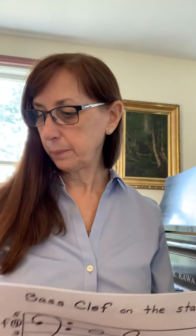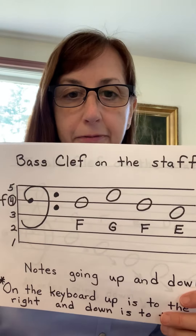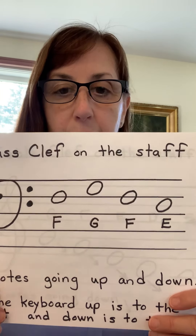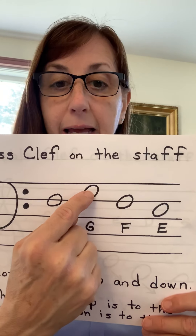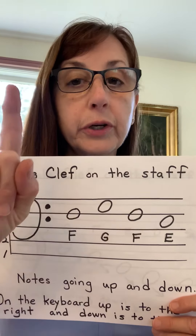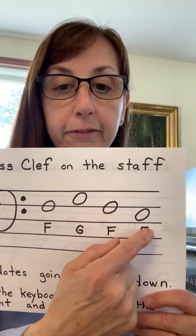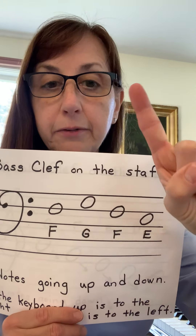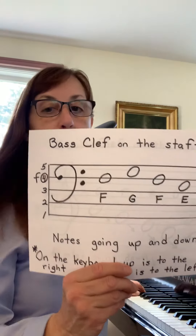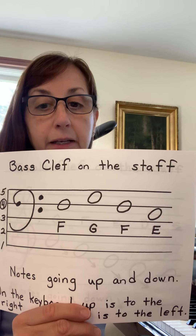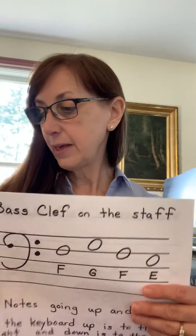Now let's look at the next one. Here we have the bass staff with a note starting on the fourth line. F goes up a second to G. Remember, we go forward in the alphabet one letter: F, G, F, E. This time put your second finger on the F and play the letters you see: F, G, F, E.